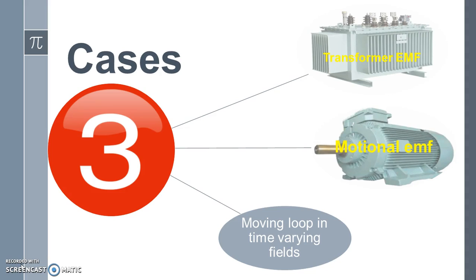For case 1, which is called as transformer EMF, the magnetic field is varied while the loop is kept stationary. Case 2 is called as the motion EMF. In this, the field is stationary while the loop is varied or the loop is moving. Case 3 is the combination of both the cases. Case 1 is used in transformers, whereas case 2 is used for motors and generators.